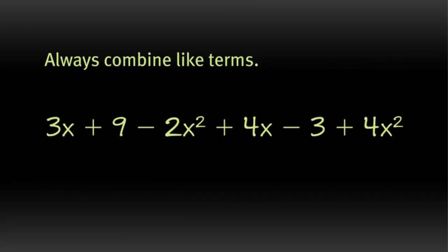First, understand that you can always combine like terms. The best way to understand what is meant by like terms is by looking at an example. Imagine you're given the expression 3x plus 9 minus 2x squared plus 4x minus 3 plus 4x squared.